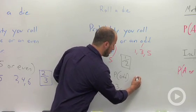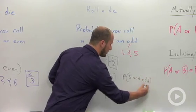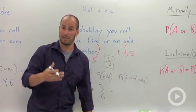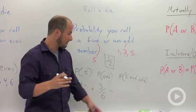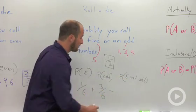minus the probability of five and odd. Any five by default is odd, so the chance of getting a five and odd is just the probability of rolling a five, which is just one-sixth.